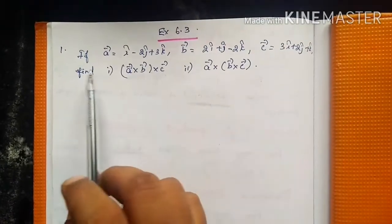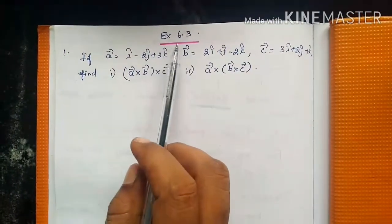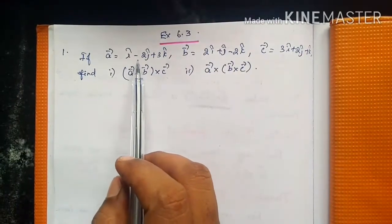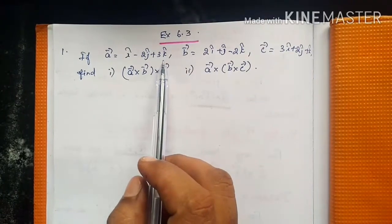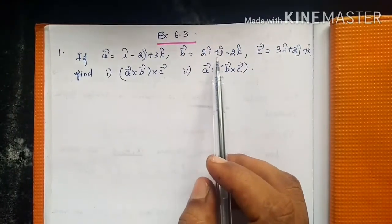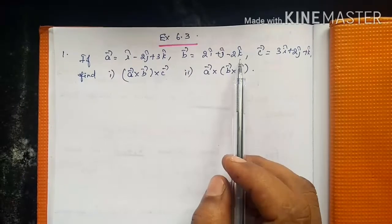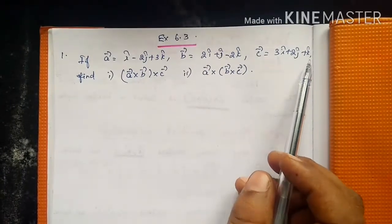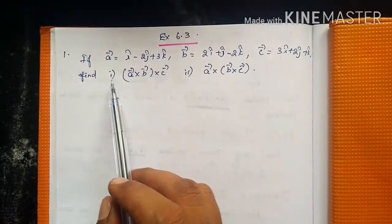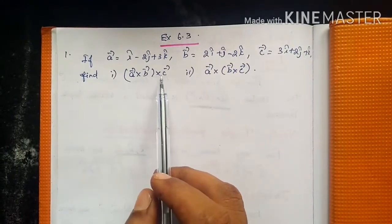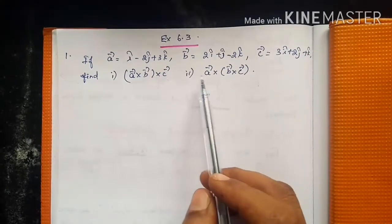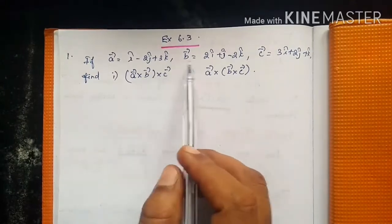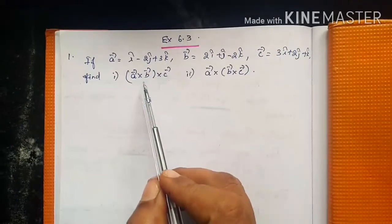We will see the first sum in exercise 6.3. A vector equals î - 2ĵ + 3k̂, B vector equals 2î + ĵ - 2k̂, C vector equals 3î + 2ĵ + k̂. We have to find the vector triple product: first subdivision (A×B)×C, and second subdivision A×(B×C).